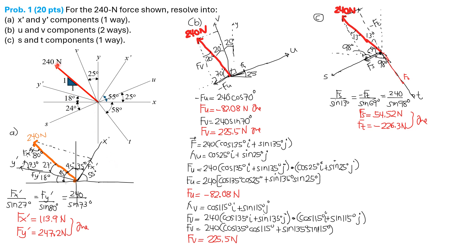The angle that the 240 Newton force makes with the X axis is 45 degrees because the slope is 1 to 1. Therefore, the force makes an angle with the Y' axis equal to 45 degrees minus 18 degrees, so this angle is 27 degrees. The X' axis makes an angle of 55 degrees with the positive X axis. Therefore, this angle is 90 minus 55, which is 35 degrees. Since the slope is 1 to 1, the force also makes 45 degrees with the Y' axis, so the force makes an angle with the X' axis of 45 plus 35, which is 80 degrees.